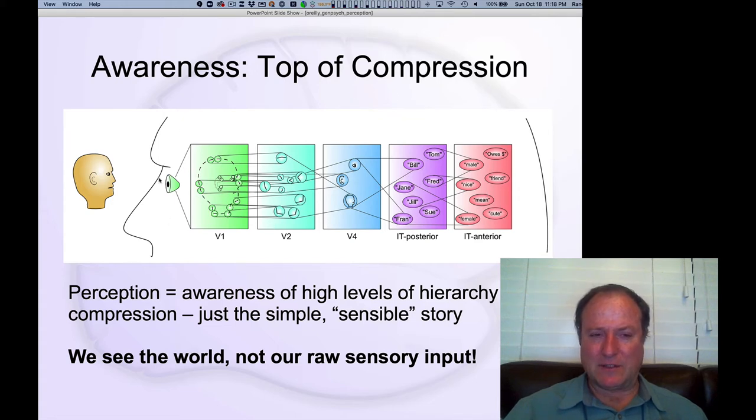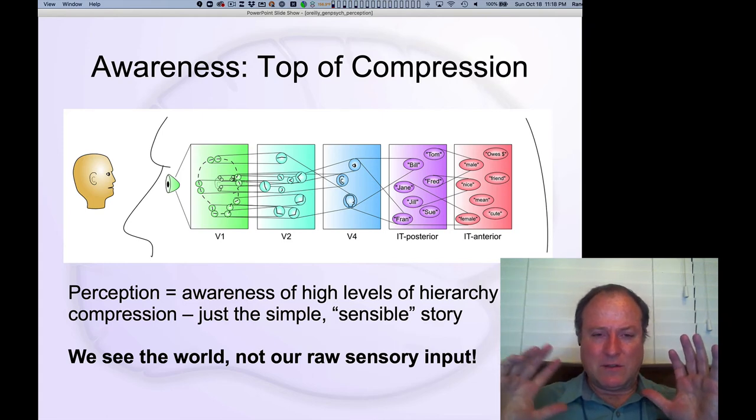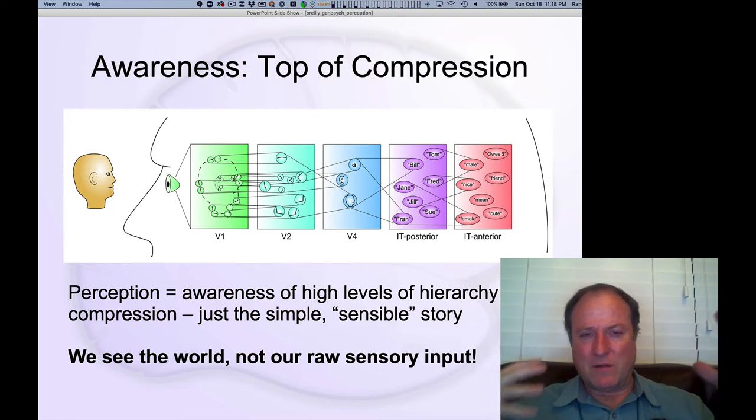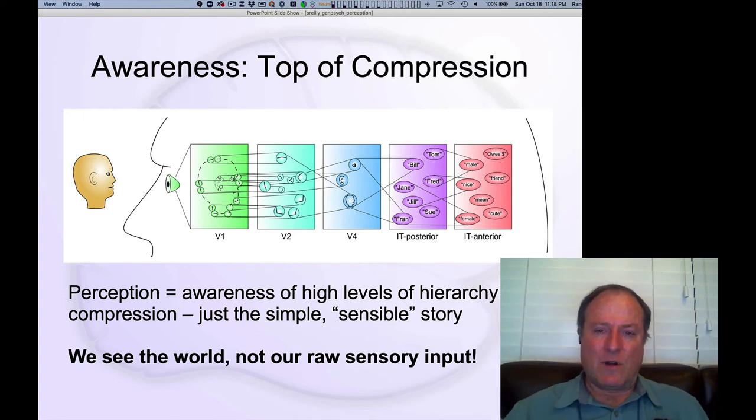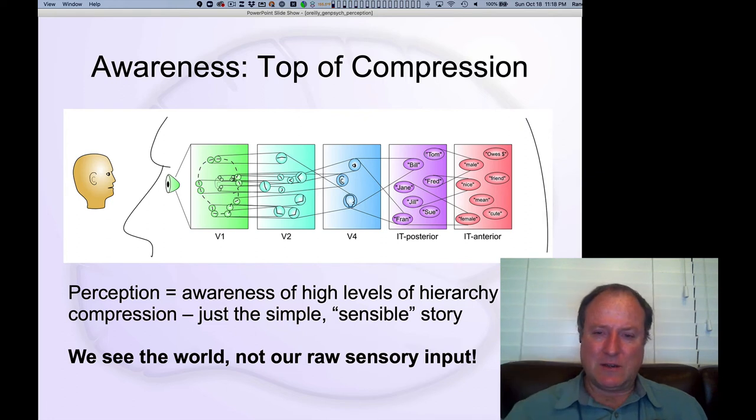All this pixel-level stuff, the raw image sensory input that's coming in is all down here at these lower levels. We're not aware of those lower levels. Those parts of our brain aren't out there talking, as we talked about in the last chapter and the consciousness chapter, those parts of the brain aren't intercommunicating with all the rest of the brain. They're not really part of this larger attractor network of recurrent connections that are interconnecting all of the high-level neurons. And that's really where our consciousness emerges, is in those recurrent connections of the more broadly connected higher levels of these pathways.